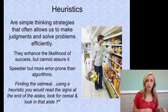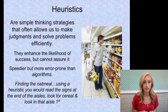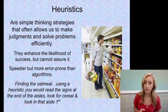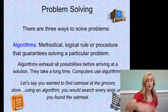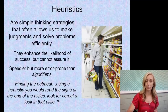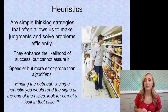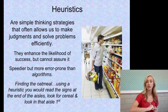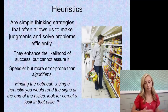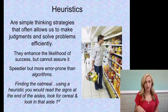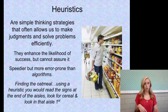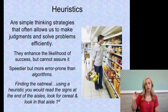A heuristic, however, involves simpler thinking strategies that often allow us to make judgments and solve problems efficiently. They don't take as long, and they enhance the likelihood of success, but they cannot guarantee it — so they're more error-prone than algorithms. With an algorithm you're guaranteed to solve the problem; with a heuristic you're not. Using a heuristic to find oatmeal, you'd read the aisle signs, look for 'cereal,' and check that aisle first — you'll probably find it, but it's not guaranteed and takes less time.